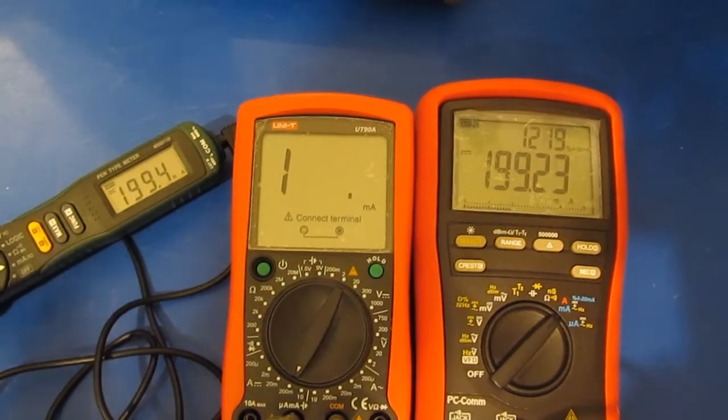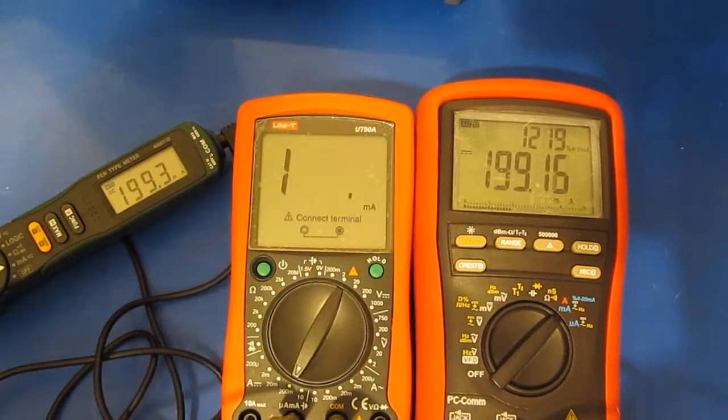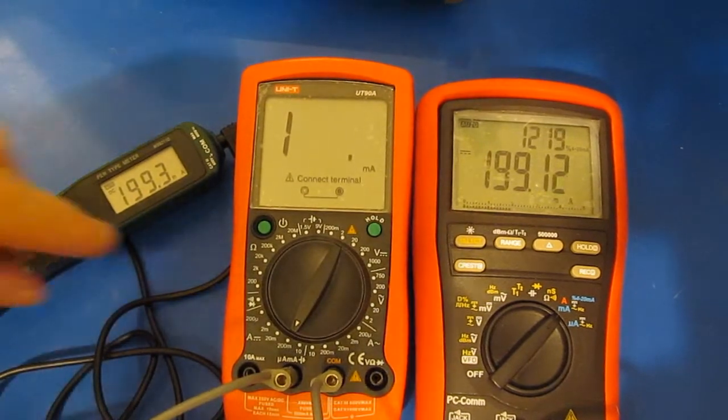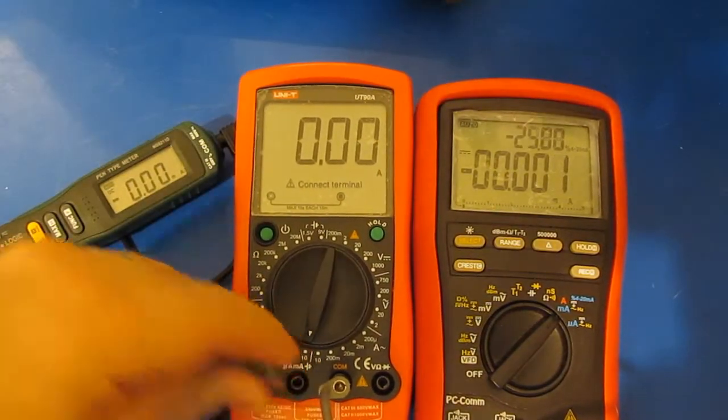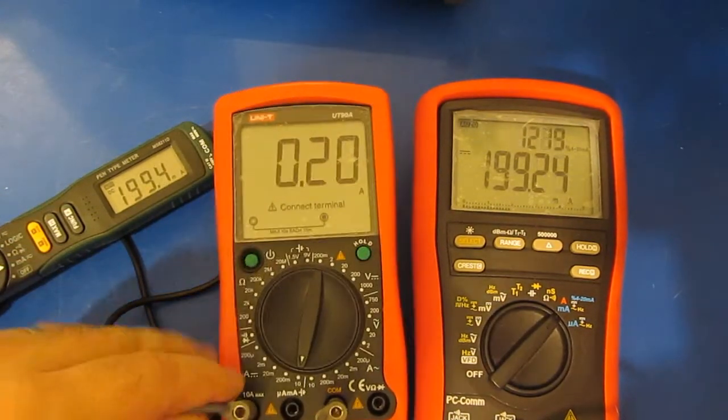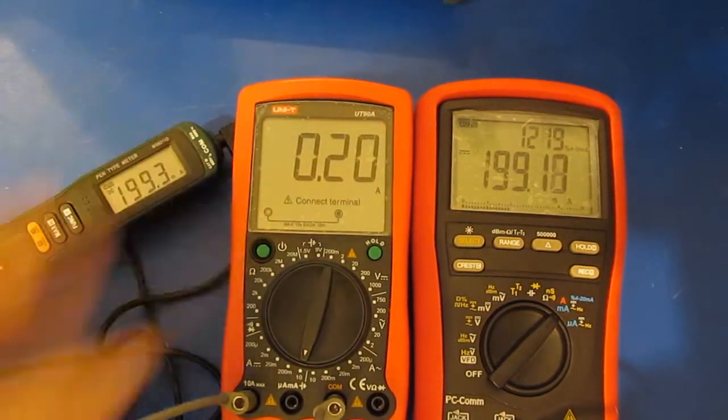Alright so this is very close to 200 milliamps. Unfortunately you can see with the UT90A this is an over range. If we go to the 10 amp scale we physically have to move the jack over. And there's our 200 milliamps.